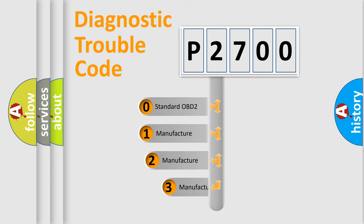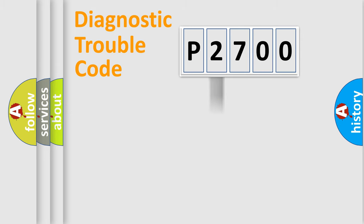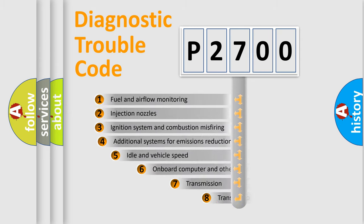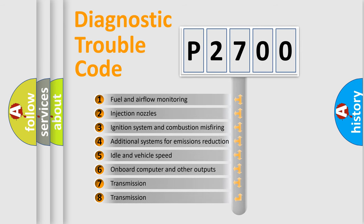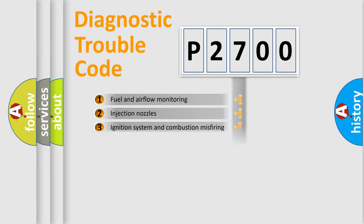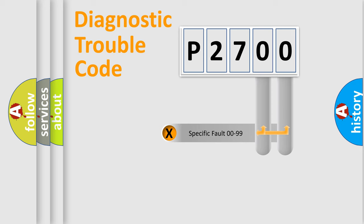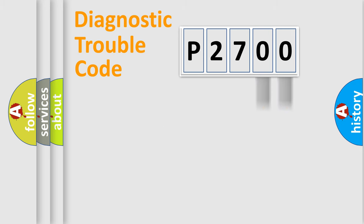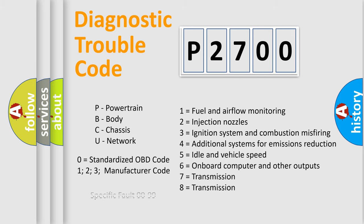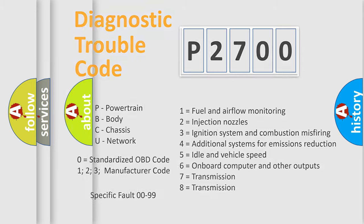If the second character is expressed as zero, it is a standardized error. In the case of numbers 1, 2, or 3, it is a more specific expression of a car-specific error. The third character specifies a subset of errors. This division is valid only for the standardized DTC code, and only the last two characters define the specific fault of the group. Such a division is valid only if the second character code is expressed by the number zero.